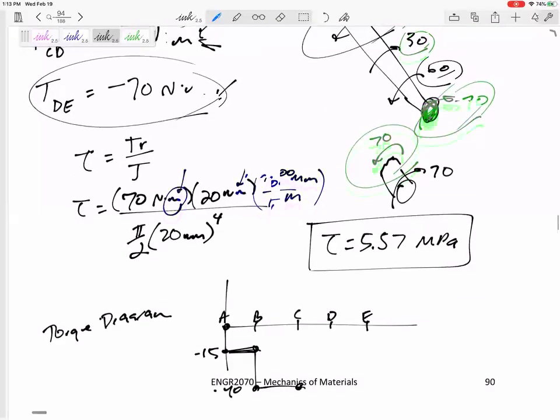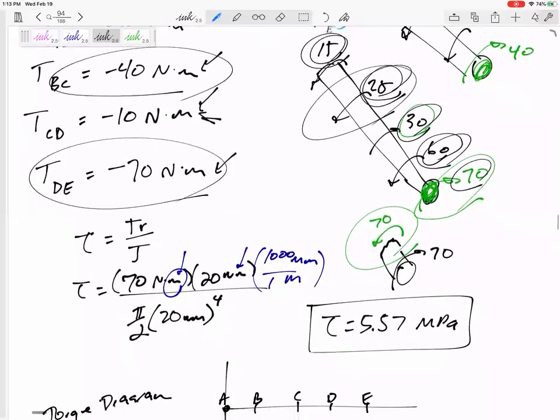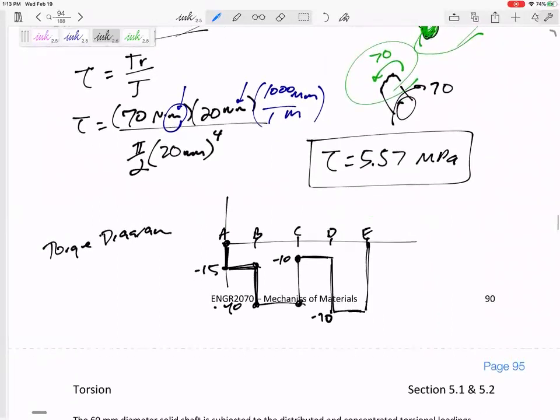But do you see how we might could just use these values: 15, 25, 30, 60. We've got 15 going this way that drops us down 15, and then another 25 drops this to 40. But then we go the other direction, 30, which brings us up to negative 10. And then we go back this direction, 60, brings us to negative 70. That's what the torque diagram would show. It would show the torque at every location.